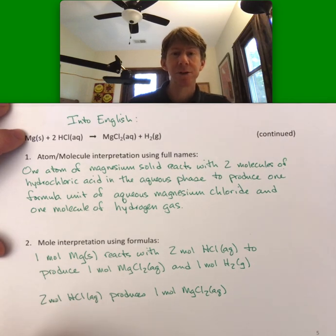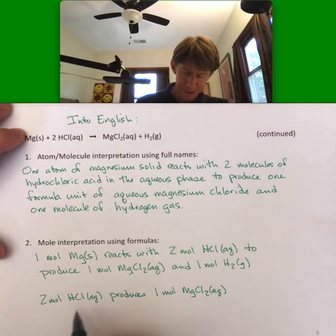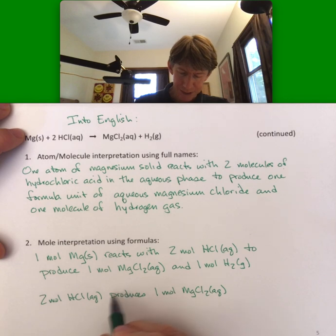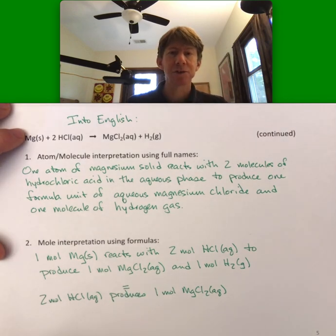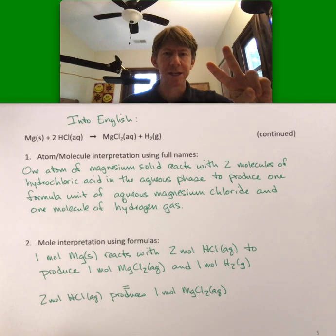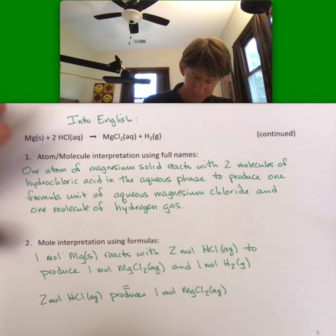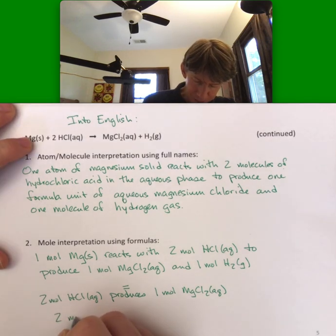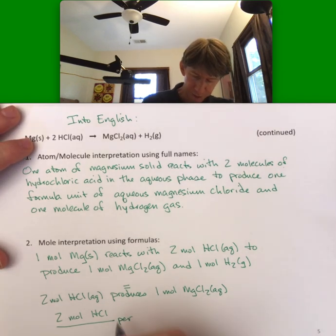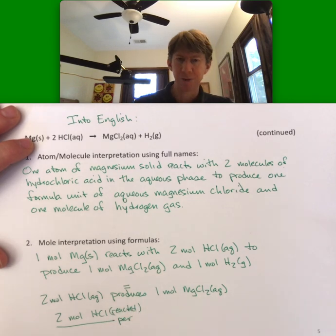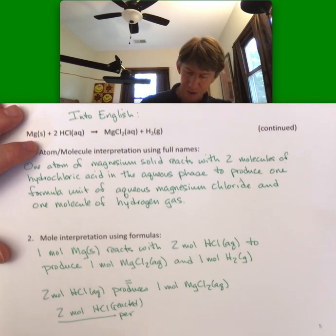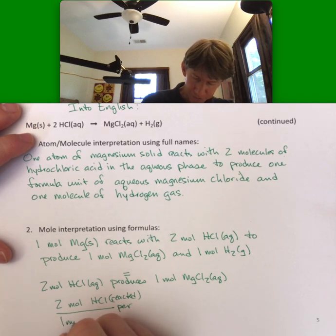And how you turn that into a unit conversion factor is produces, this basically becomes equal to. If you start with two moles of HCl, you can produce one mole of magnesium chloride. And so it becomes two moles HCl per, or we can even write reacted here, although we don't typically after the beginning do that. Two moles HCl reacted per one mole magnesium chloride produced.